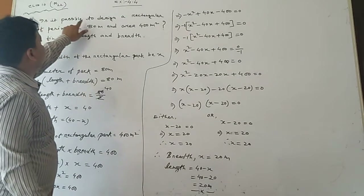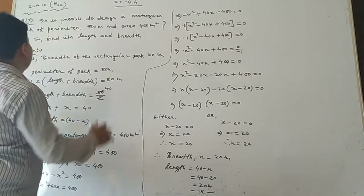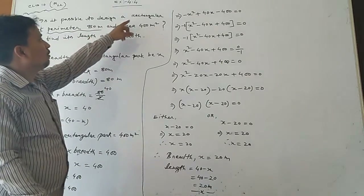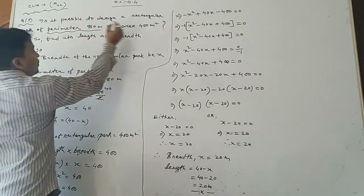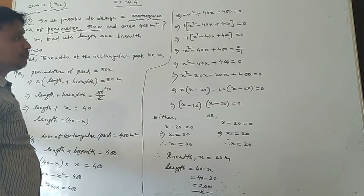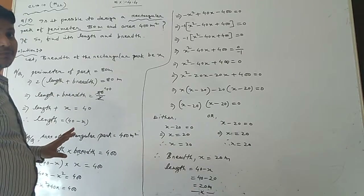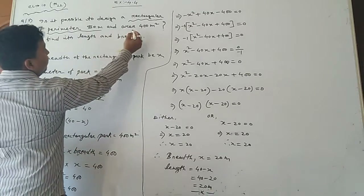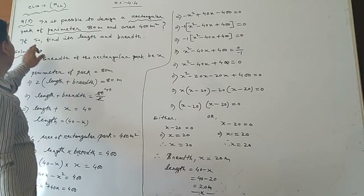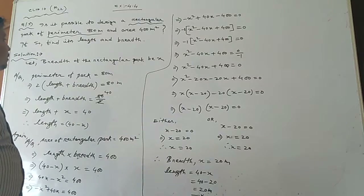There is written: is it possible to design a rectangular part of perimeter 80 meters? The shape of the part is rectangular, so we have to use the perimeter of a rectangle formula, that is 2 into (L plus B), length plus breadth. And area is 400 meter square given. We have to find its length and breadth.